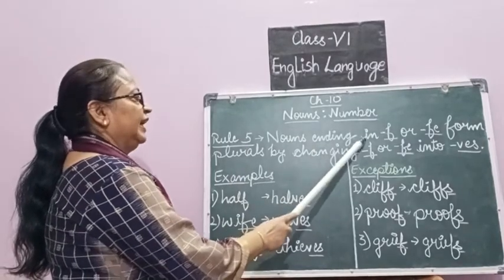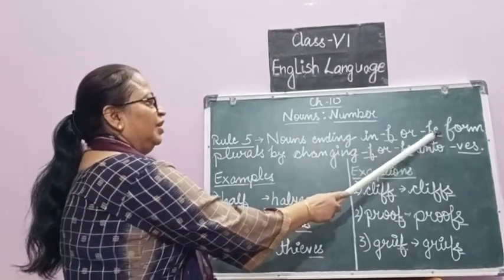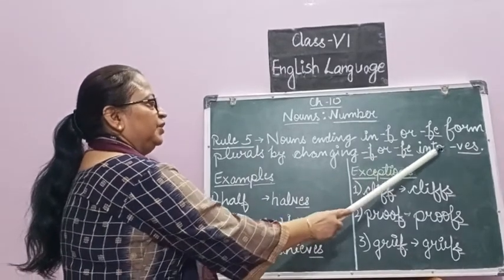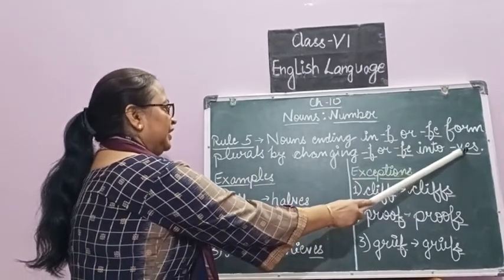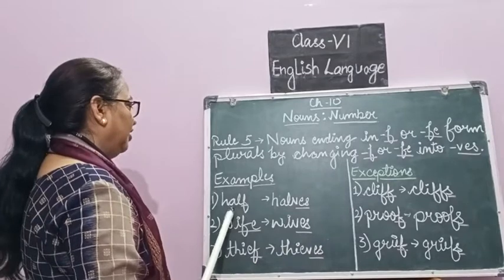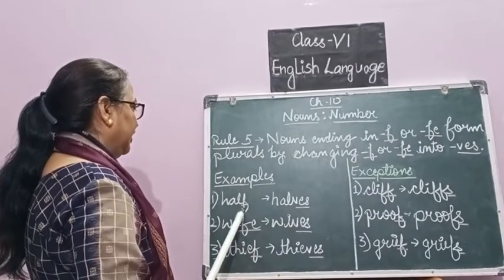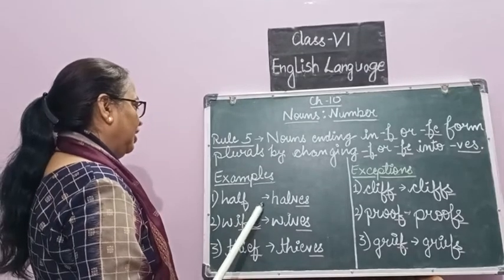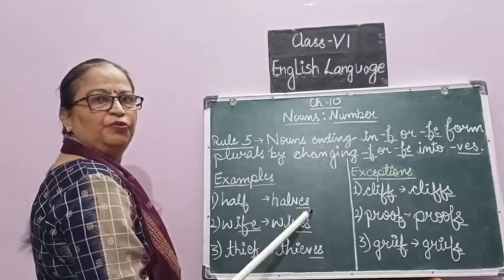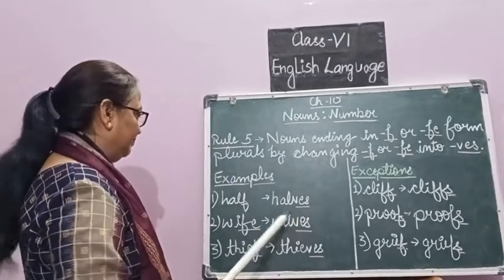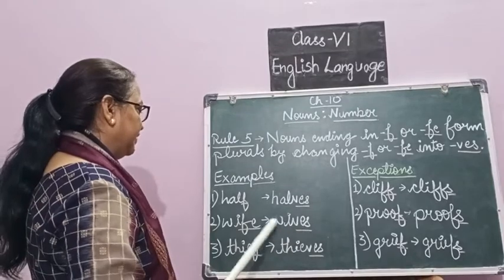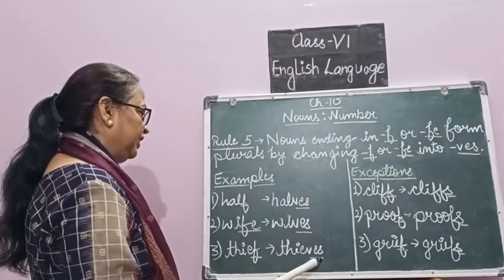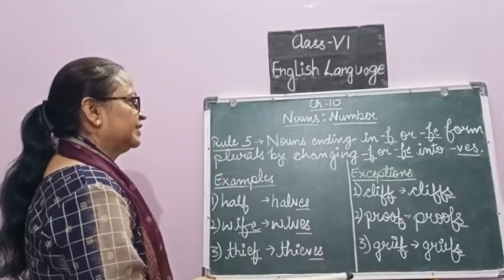Nouns ending in F or FE form plurals by changing F or FE into VES. For example, 'half' is ending in F, so to make plural, F changes into VES — giving us 'halves'. Similarly, 'wife' changes into 'wives', and 'thief' changes into 'thieves', etc.